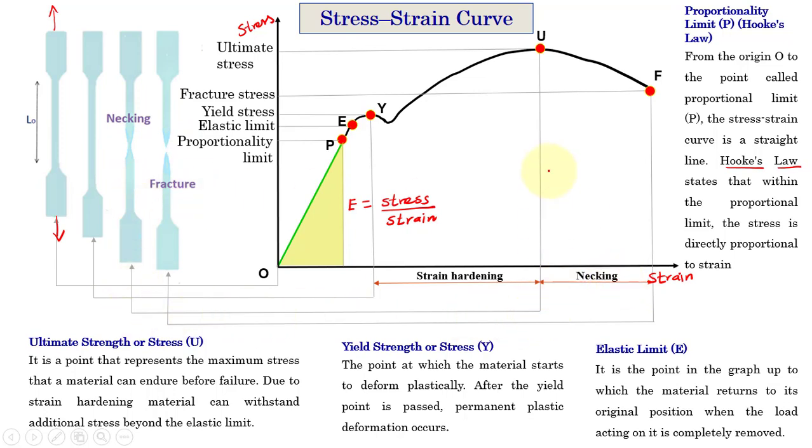Here, you see that at this point, the necking starts to happen. That means there is a reduction in diameter at this point from the original specimen and the cross sectional area of the material at this point is reduced continuously and finally the fracture happens.